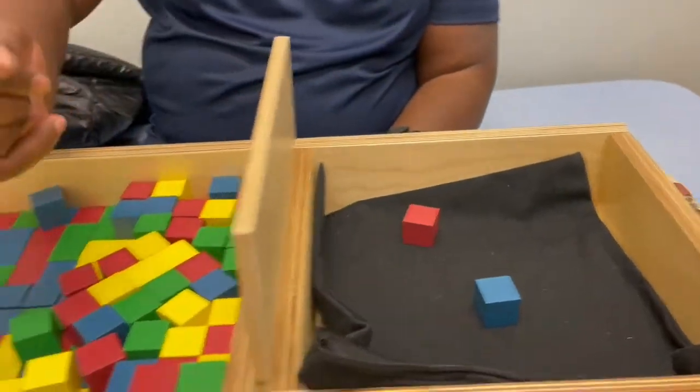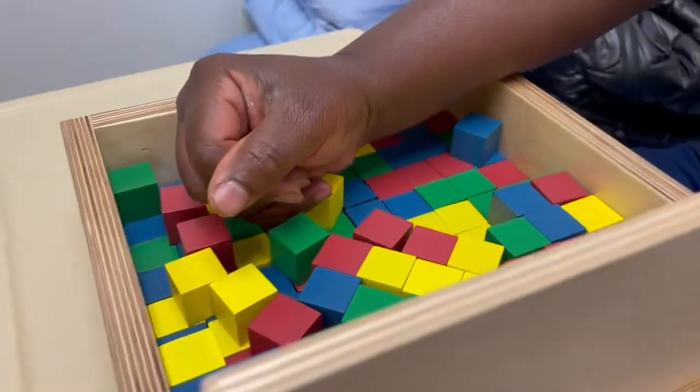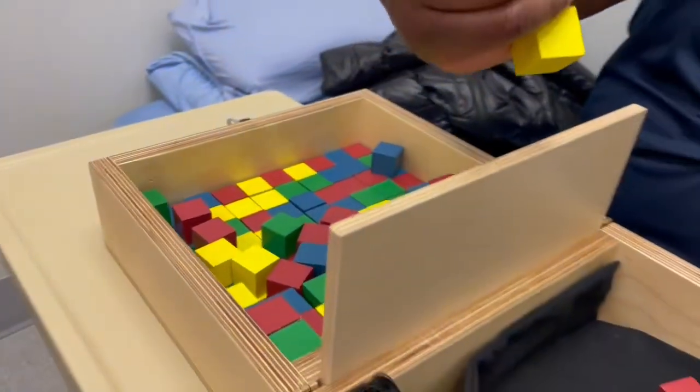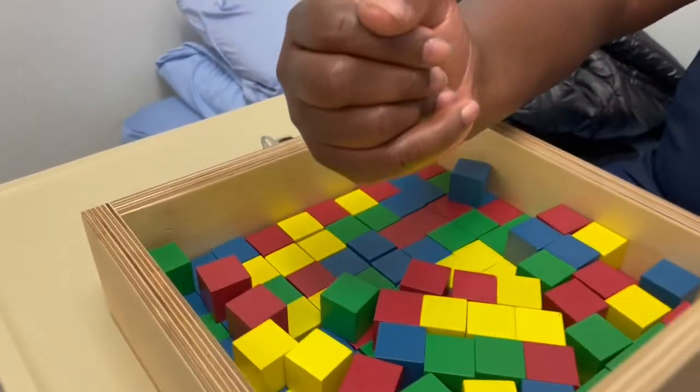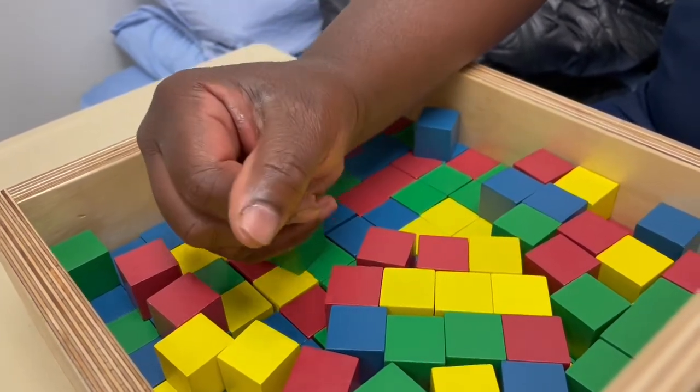We really felt that it was coming from the intrinsics—the interossei and lumbricals to digits four and five, and possibly the median innervated as well, but mostly was an ulnar nerve phenomenon. Also, you can see that thumb position is very much an ulnar nerve position as it's adducted across.